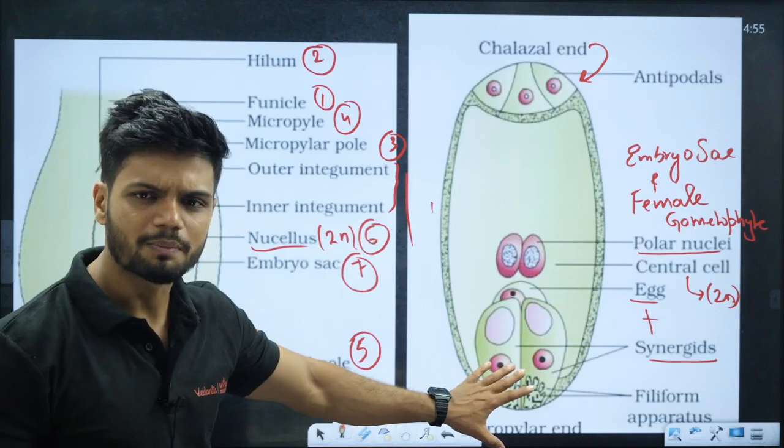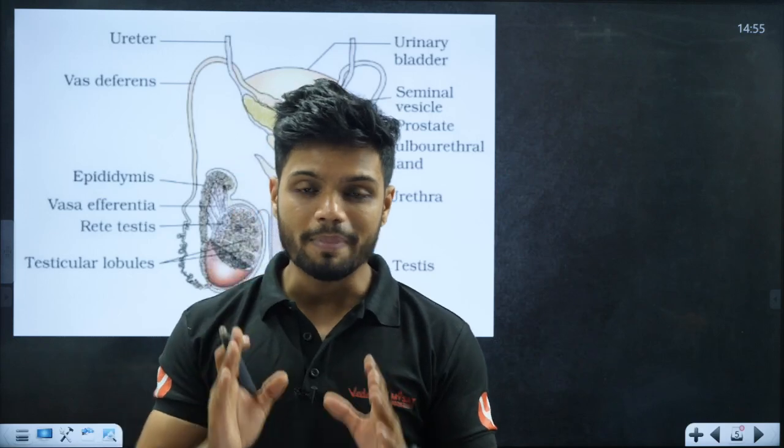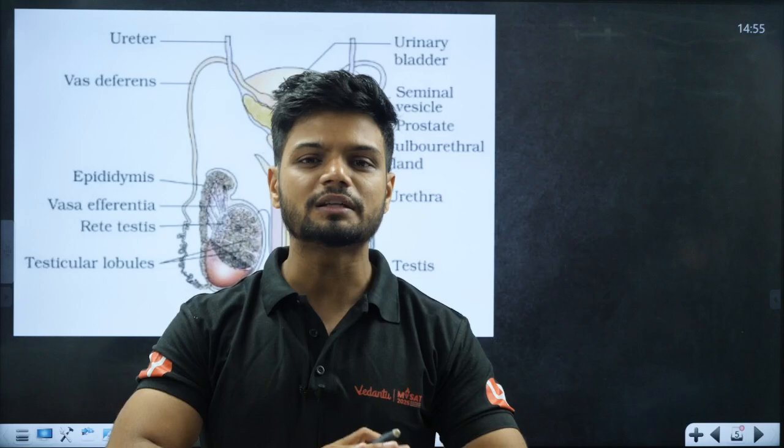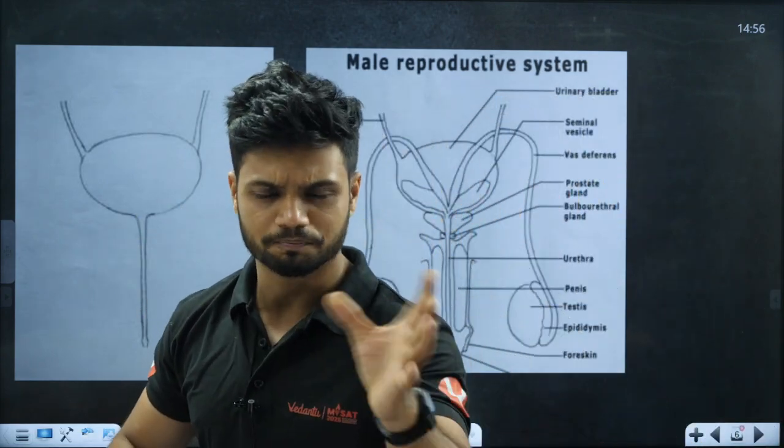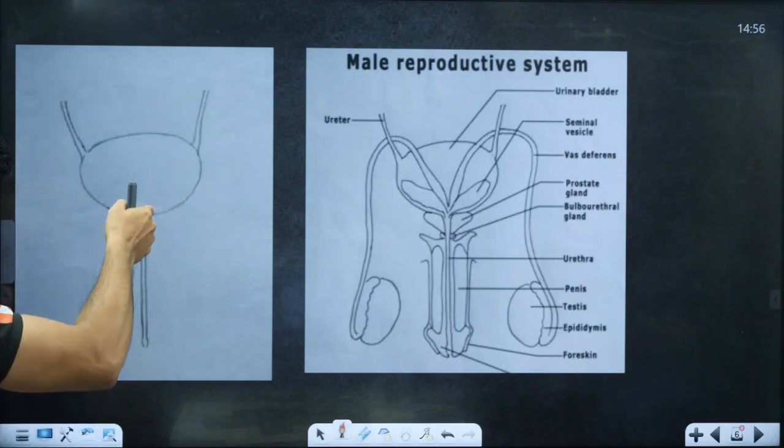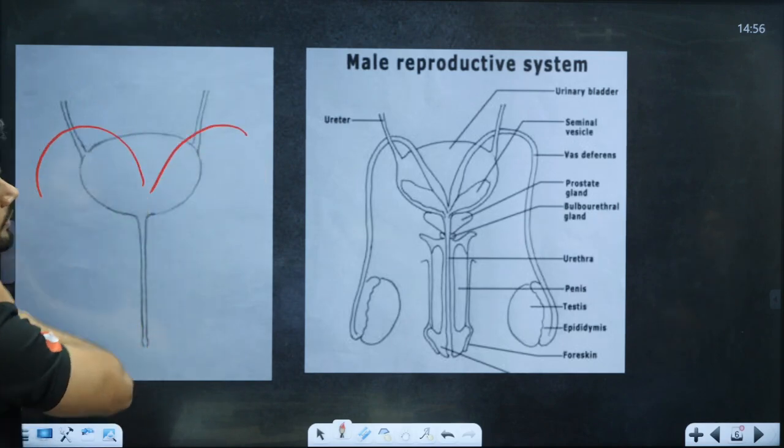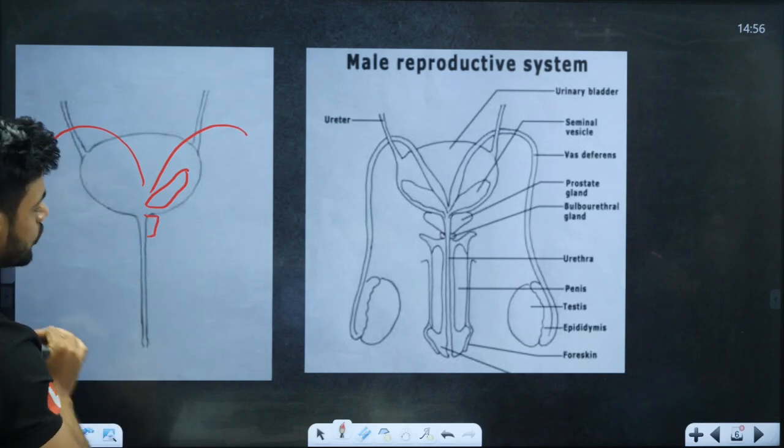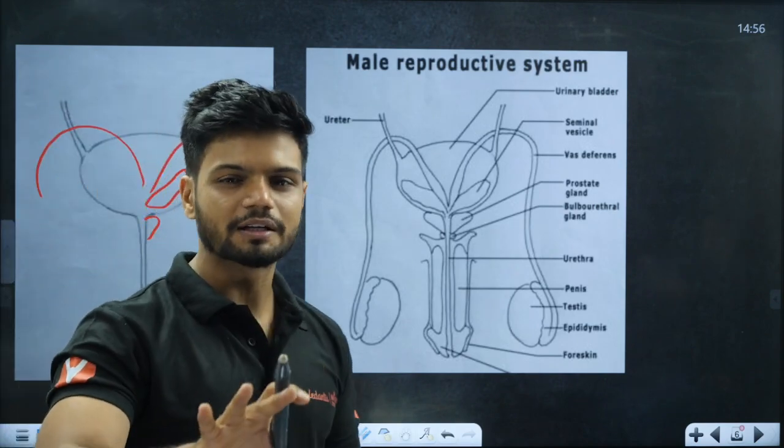Next diagram is human reproduction. Male and female reproductive structures are very important. These diagrams come every single year. There's a trick to draw the male reproductive system - first make one outer frame, start with urinary bladder at the top, then urethra, then draw the ducts like vas deferens, then glands like seminal vesicle gland, then external genitalia.